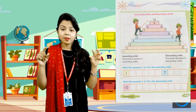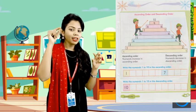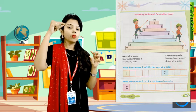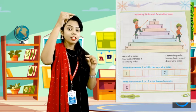We have two steps and there are some numbers: one, two, three, four, five, six, seven, eight, nine, ten.